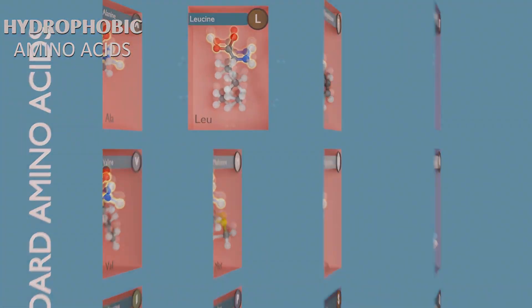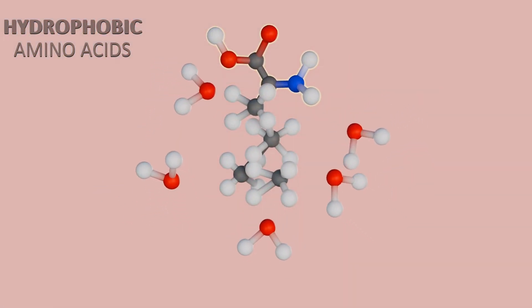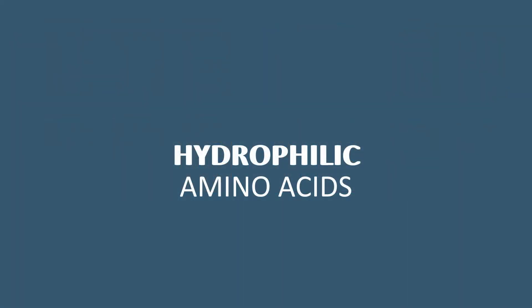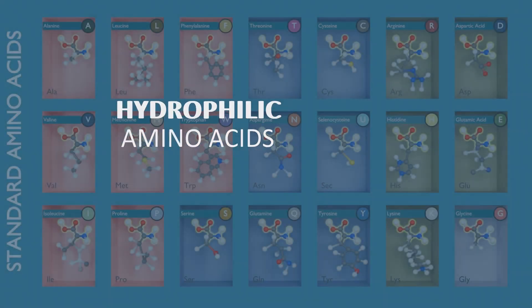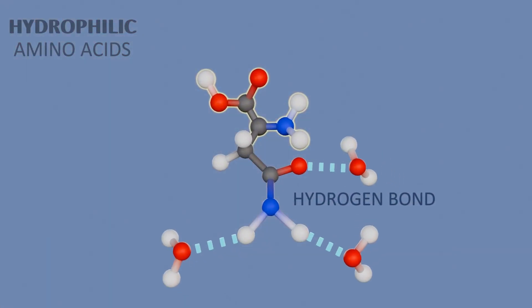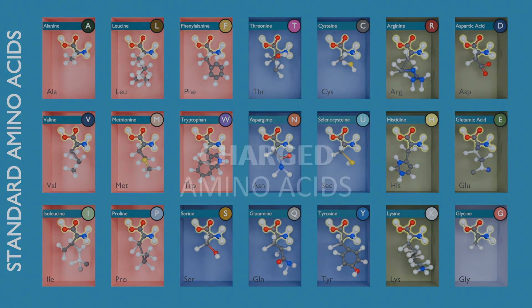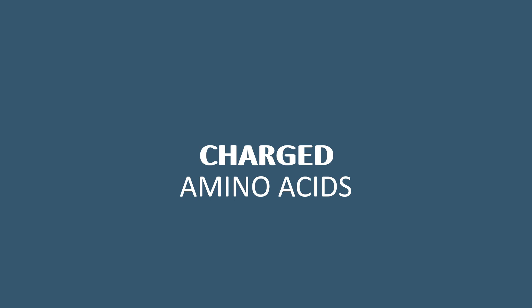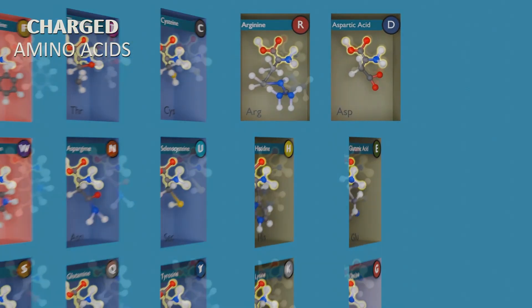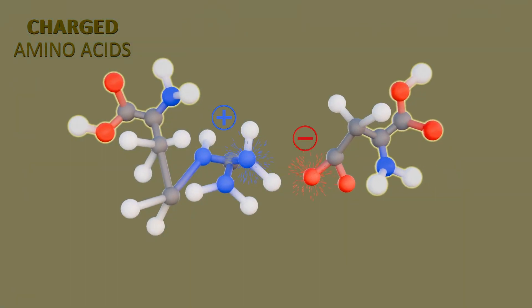Hydrophobic amino acids have carbon-rich side chains, which don't interact well with water. Hydrophilic, or polar, amino acids interact well with water. Charged amino acids interact with oppositely charged amino acids or with other molecules.